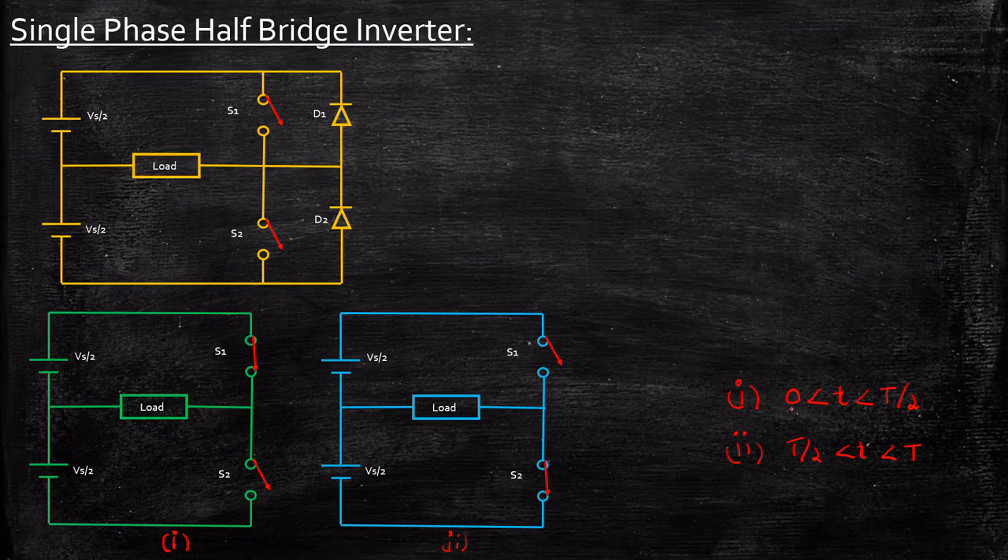So from zero to T/2, we will turn on thyristor S1 by giving a firing pulse. The current starts flowing from this direction through this path—let's call this A and this B. So the current flows through this path. In this case, plus will be here and minus will be here, considering this direction as convention.